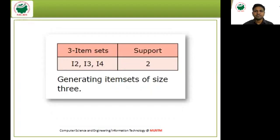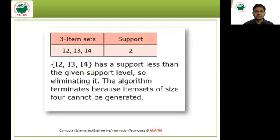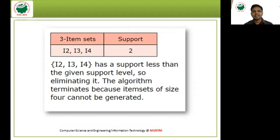Next, we generate item sets of size 3. The candidate is {I2, I3, I4}, which has support 2. Since support 2 is the minimum threshold, this is retained but no item sets of size 4 can be generated. The algorithm terminates, and the final frequent item sets from the transactional database are {I2, I3}, {I3, I4}, and {I2, I3, I4}.